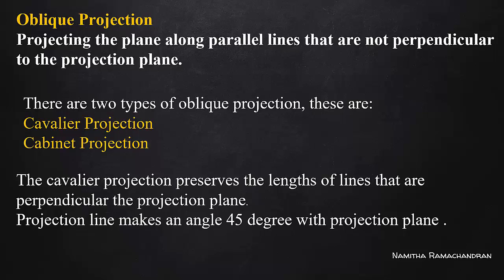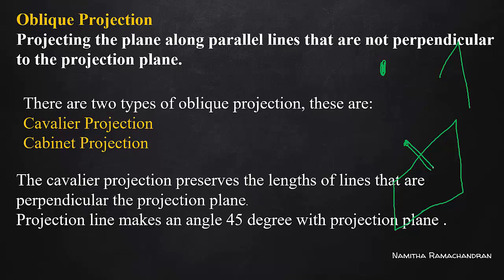So, what is Oblique Projection? Generally, in Oblique Projection, we have an object and a projection plane. The projection lines hit the projection plane at a particular angle other than 90 degrees. If the projection lines hit the projection plane at an angle not equal to 90 degrees, these are called Oblique Projections.